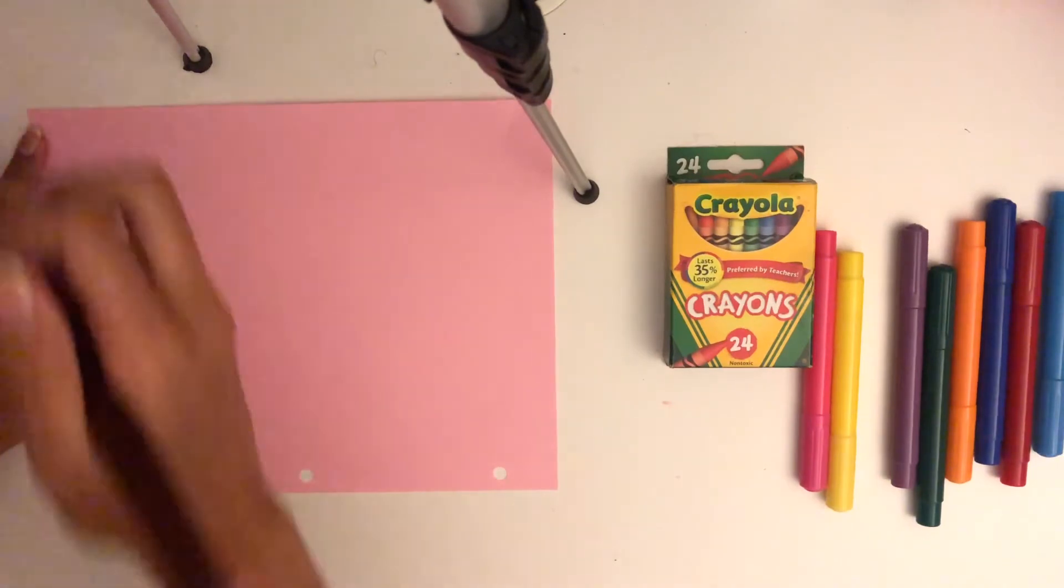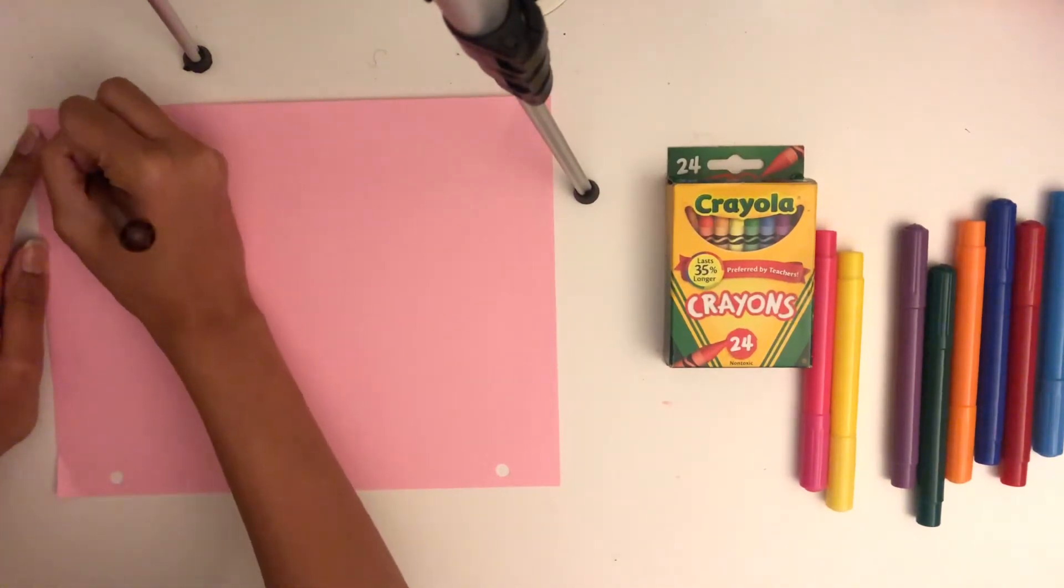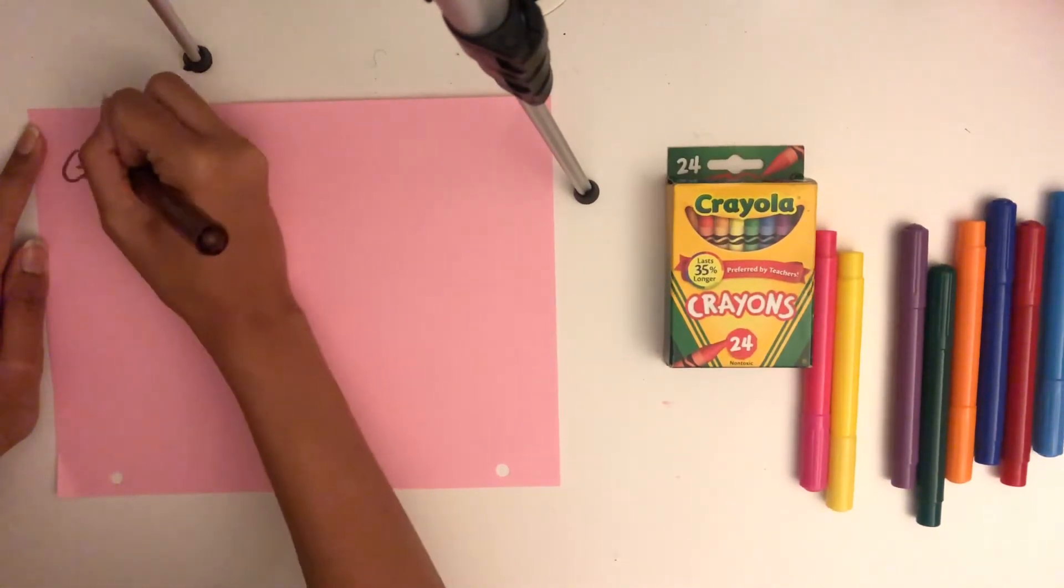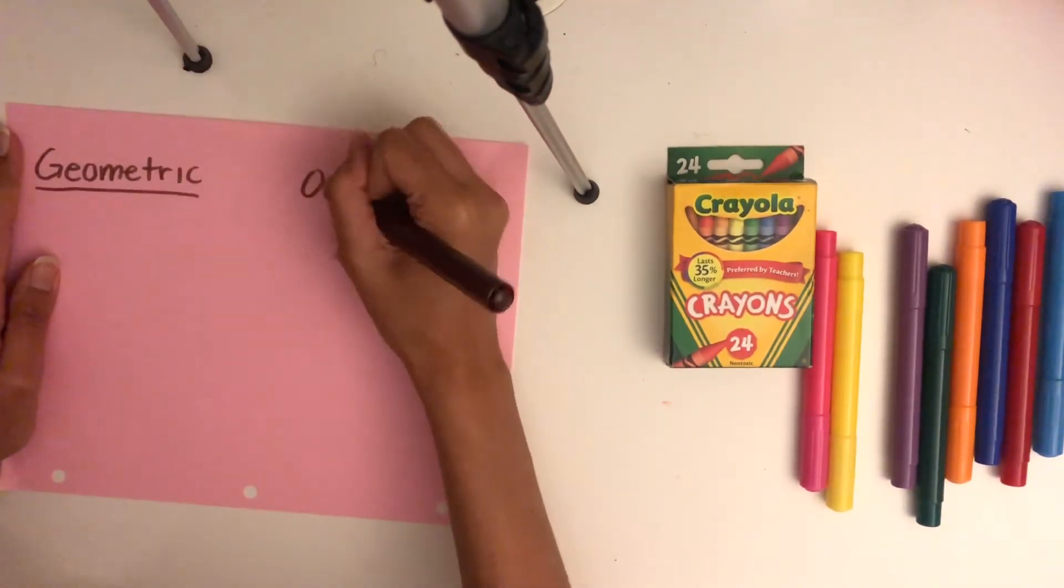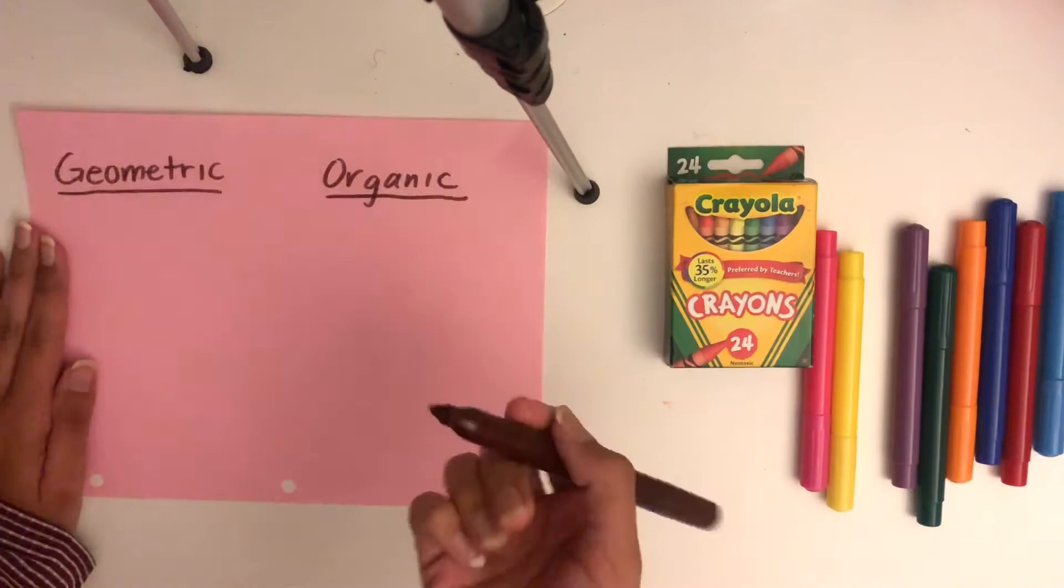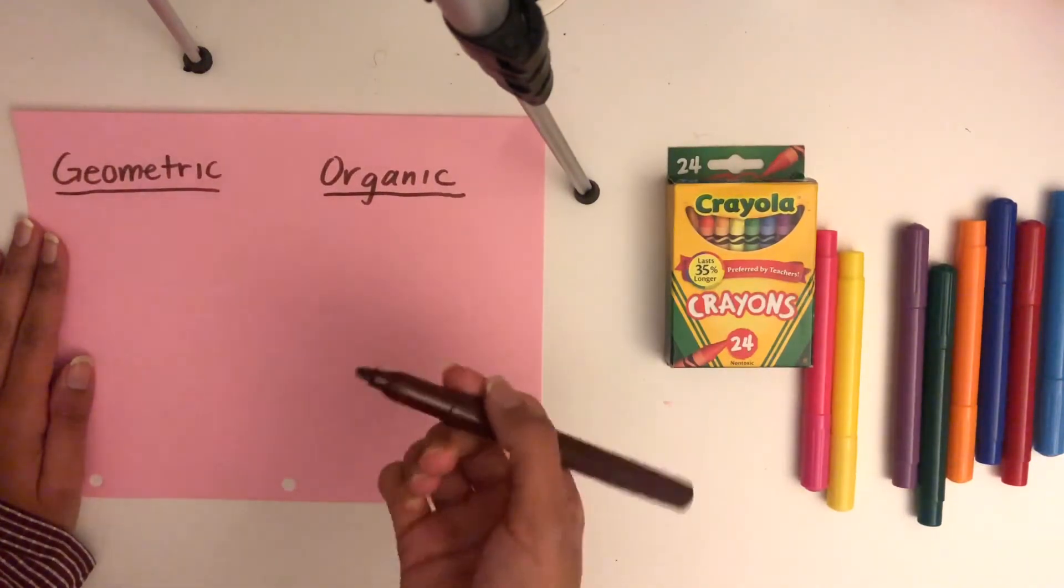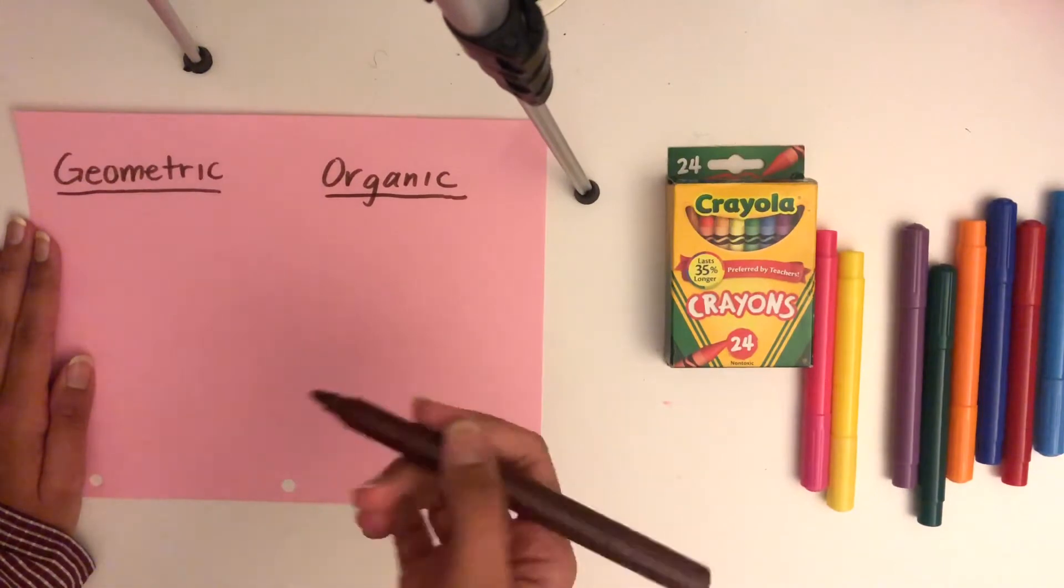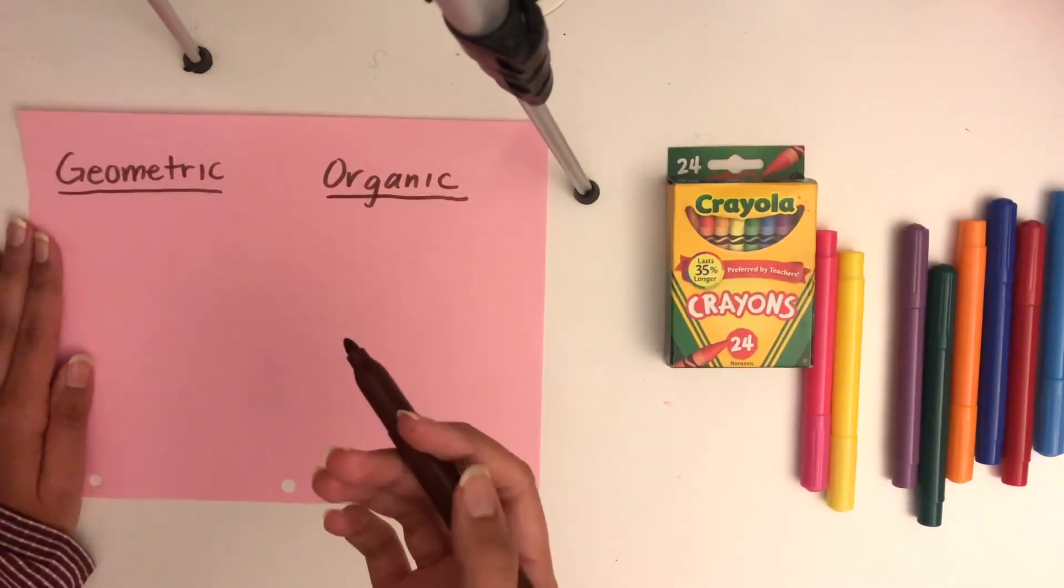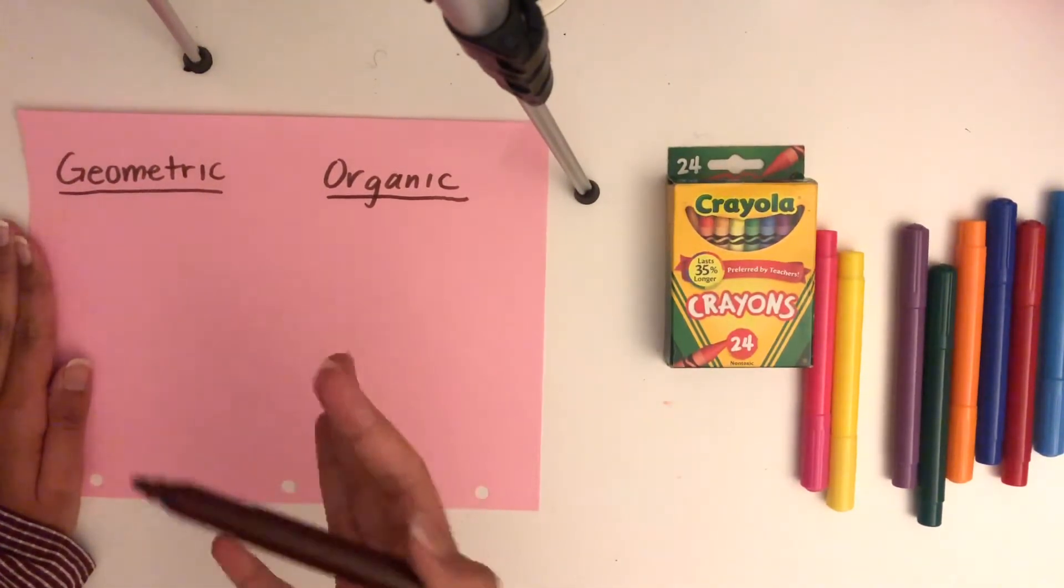So to warm up for our drawing, we're going to talk about geometric and organic shapes. As we know, giraffe's fur has spots on them, and they can have sharp edges, smooth edges, and be all kinds of different shapes.